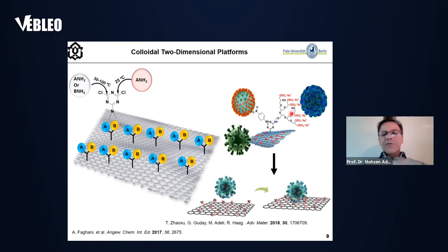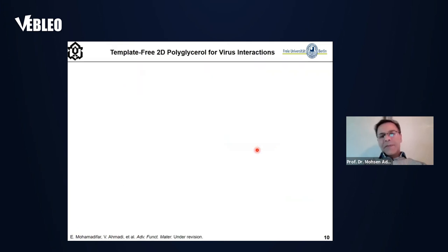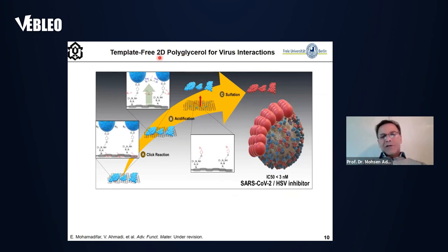We conjugated different monomers and macromonomers to the surface of the graphene platform by this linker, and investigated their interaction with different biosystems like pathogens, viruses, bacteria, and cancer cells. We found this is a really versatile method to produce a wide range of graphene platforms for different applications. What I want to talk about today is using such a platform to produce two-dimensional polyglycerides for biomedical applications.